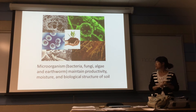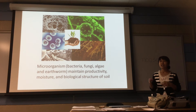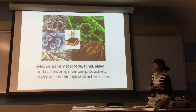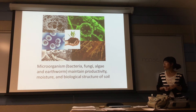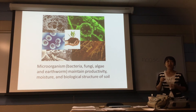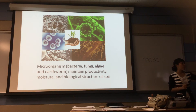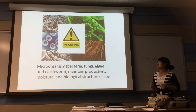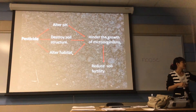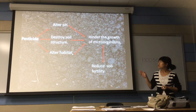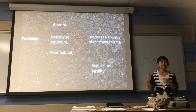Microorganisms — what are they? They can be bacteria, fungi, algae, and earthworms. Some of them are considered good and some are bad bacteria. But I want to focus on the good microorganisms. Their role in the soil is to maintain the productivity, the moisture and biological structure of the soil. Which means that they are the part that decides the fertility level of the soil. So what happens if we use pesticides a lot and pesticide residue remains on the soil? It can alter the pH of the soil, destroy soil structure, and maybe alter the habitat of these micro-animals.